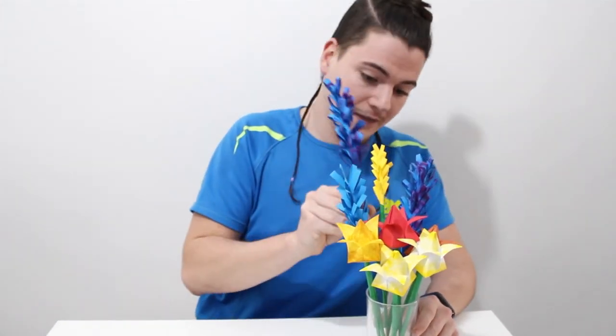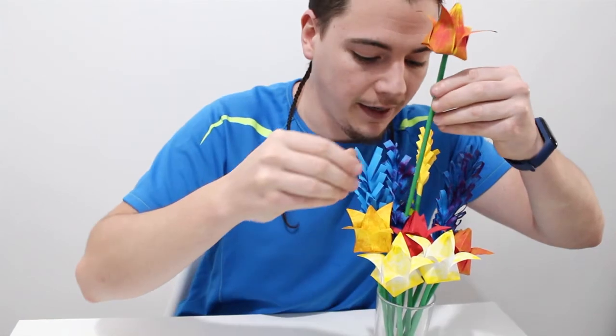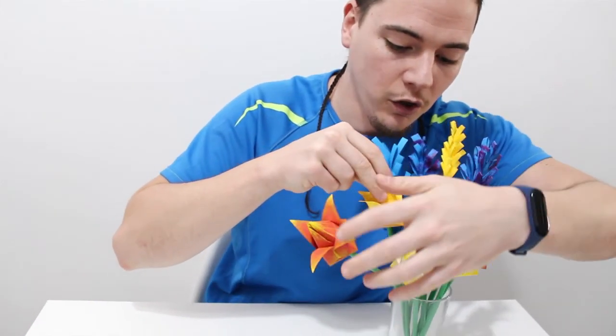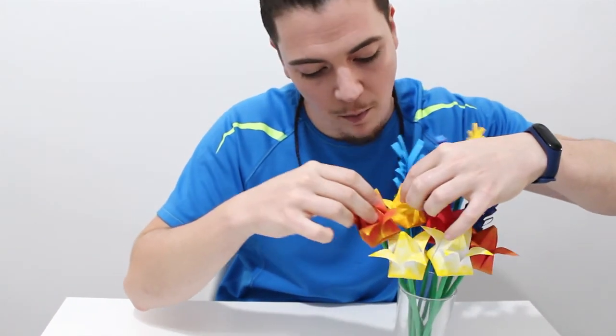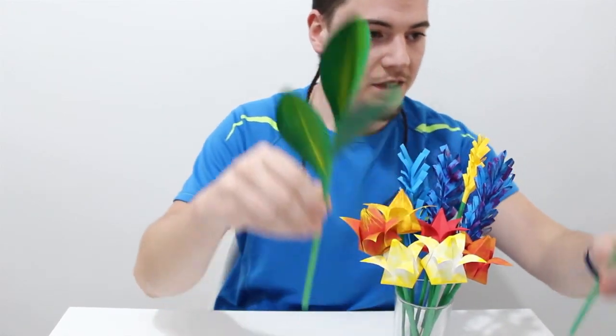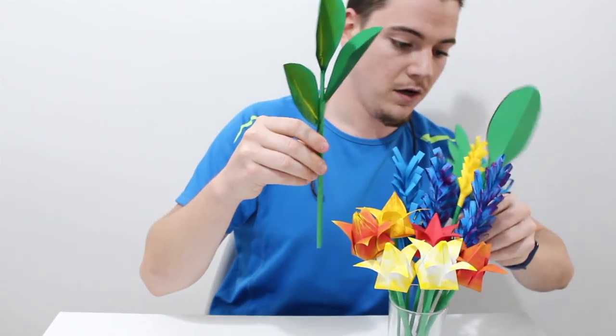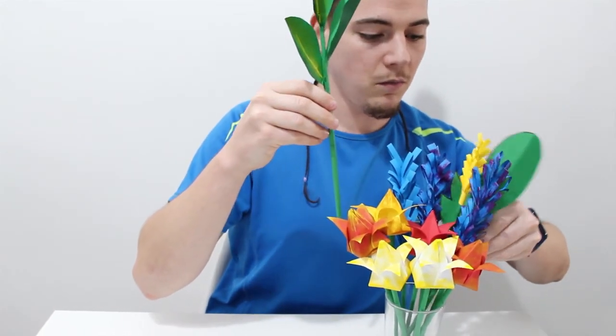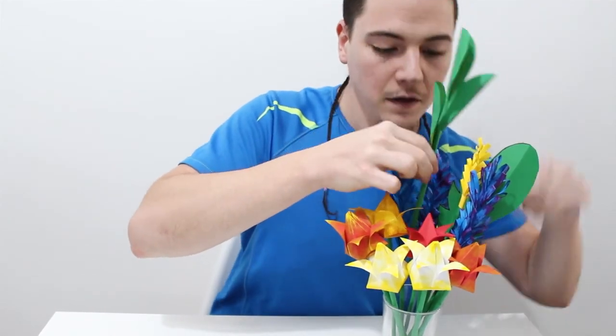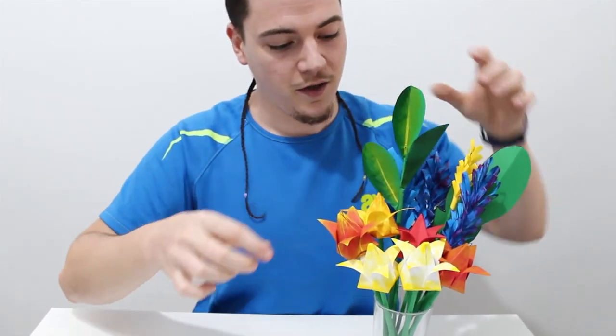Ahora ha llegado el momento de poner las flores en nuestro vaso o jarrón de la forma que más os guste. Ahora tendréis que hacer una composición super chula. Por ejemplo, esta va a ir aquí, a ver por aquí. Y ahora las hojas, yo creo que por detrás. A ver así, muy bien. Y así, ¿qué os parece?